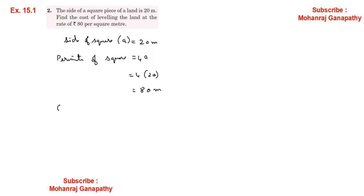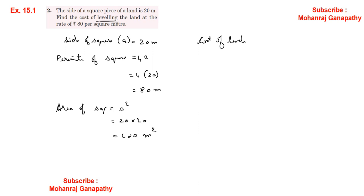For the cost of leveling, we need the area. Area of square = A² = 20 × 20 = 400 square meters. Cost of leveling = 80 per square meter × 400 = 32,000. So Rs. 32,000 is the cost of leveling.